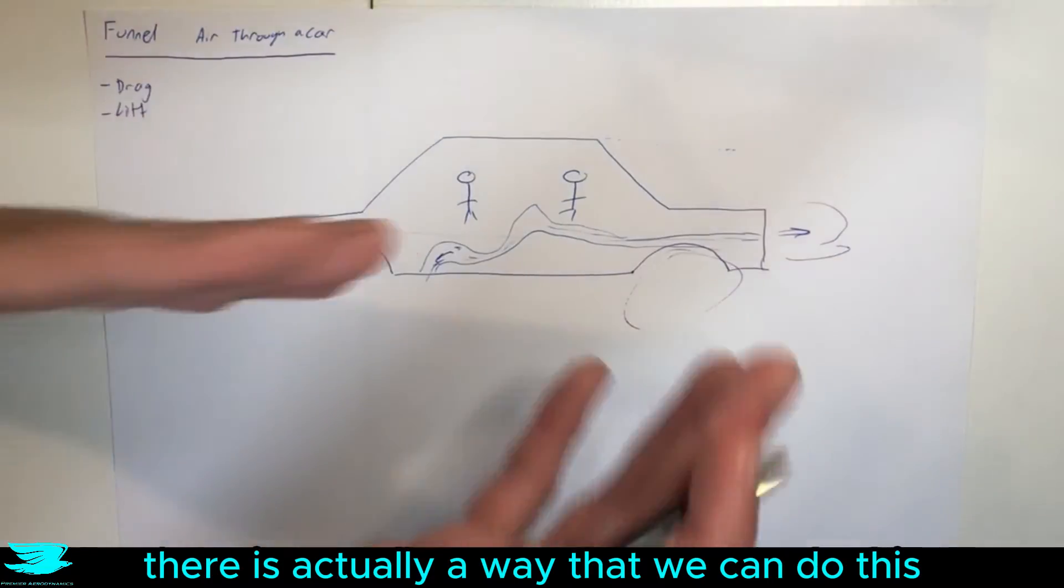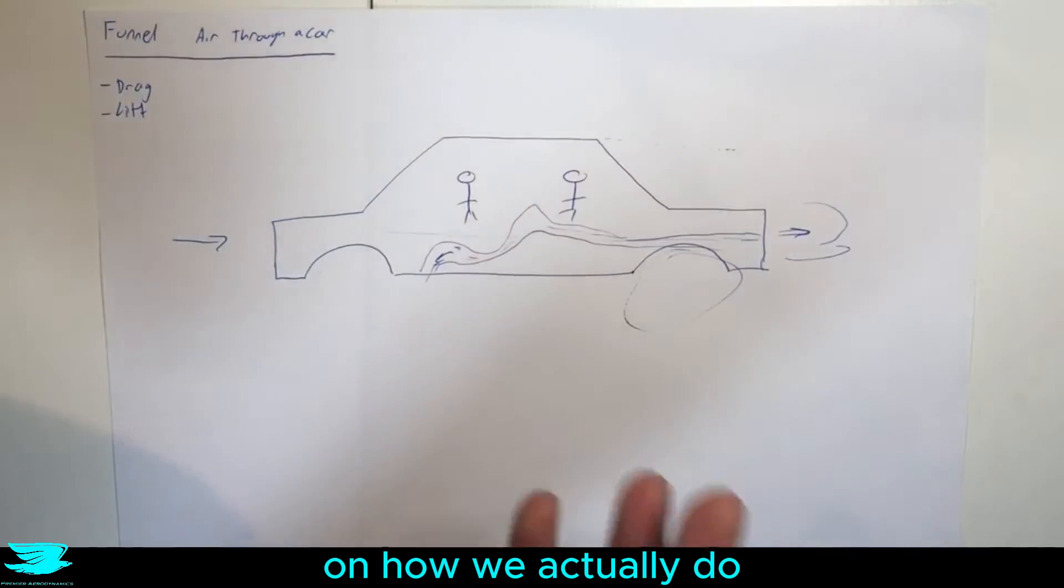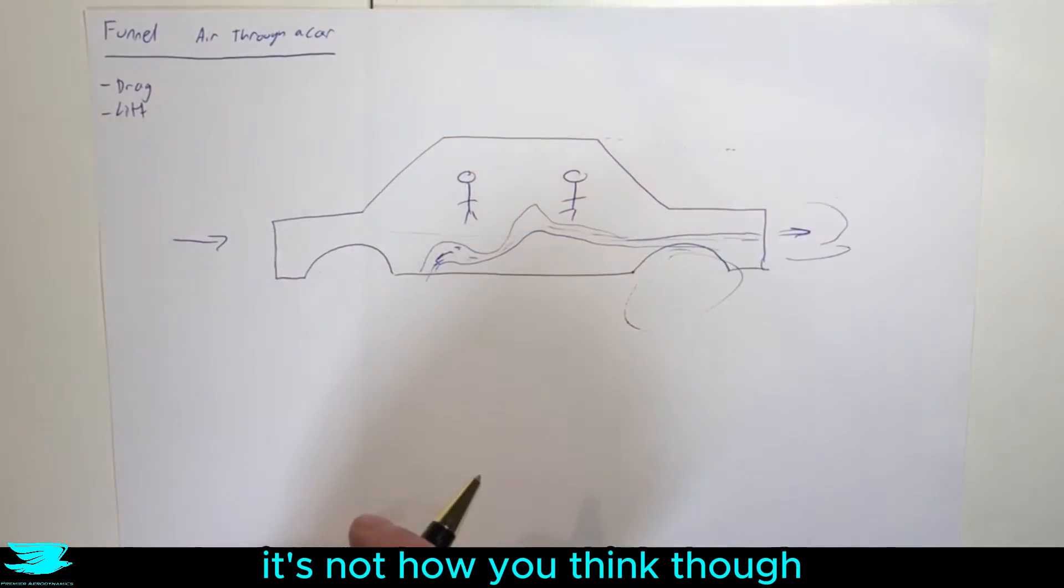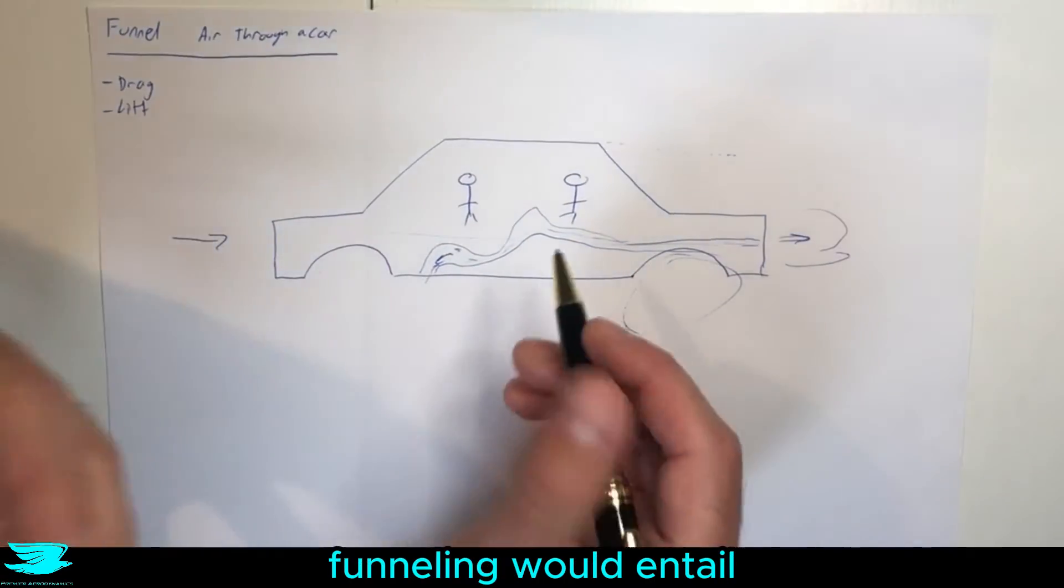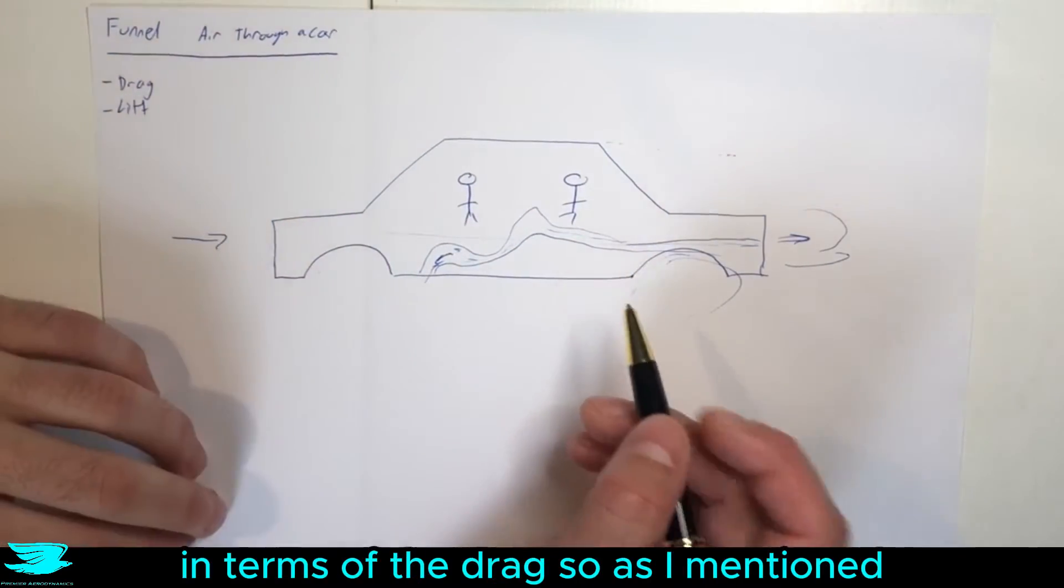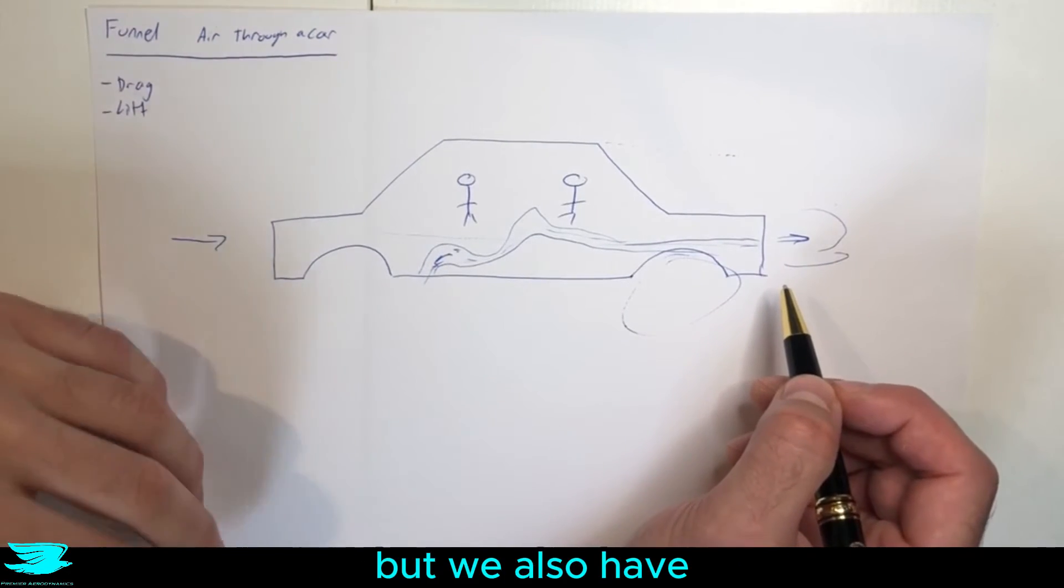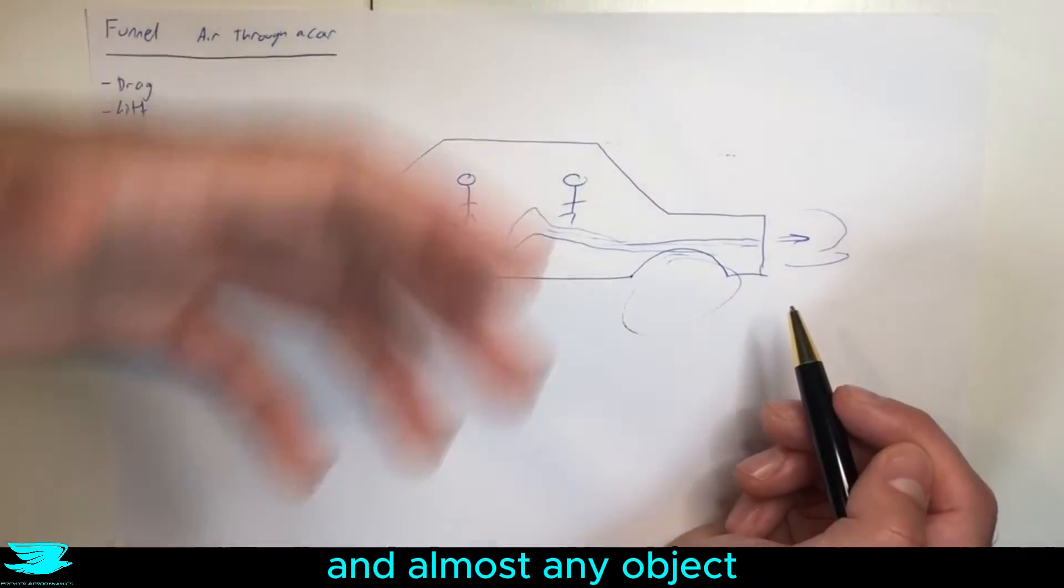There is actually a way that we can do this and this is actually becoming more and more popular, which we'll cover at the end of this video on how we actually do kind of funnel the air through. It's not how you think though. In terms of the drag, let's talk about what this funneling would entail. The main component of the drag of a car is the pressure drag but we also have the skin friction drag and the vortex drag for any car really.